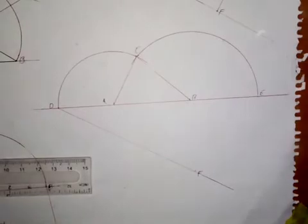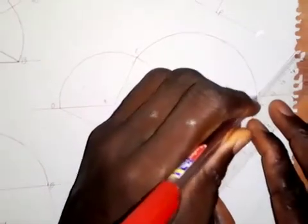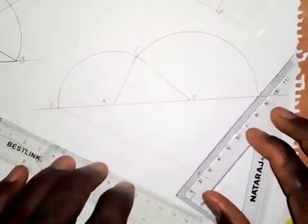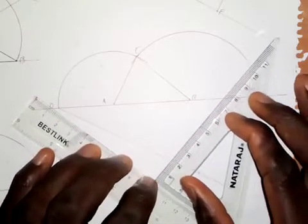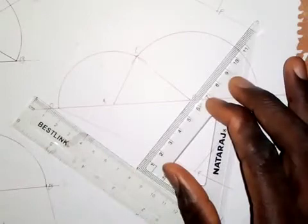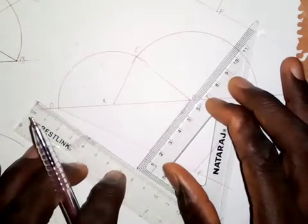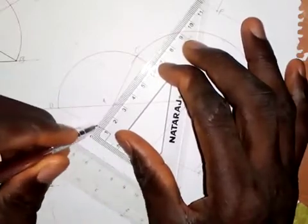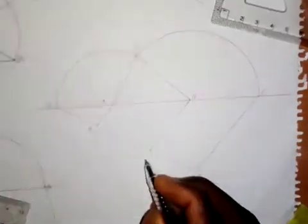The next thing is to join E and F together. Then I will take my C-square, set it on line EF, and shift it to point B to draw a parallel line. I will also shift the C-square to point A to draw another parallel line — so the lines are parallel. I will call these intersection points X and Y.